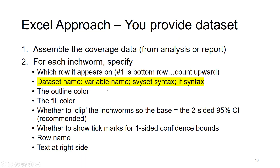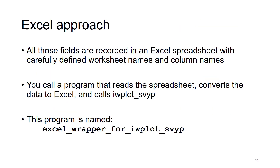In other situations, you might not have estimated the coverage yet, but you have the dataset sitting around with the zero-one outcome variable. So what you provide instead is the dataset name, the variable name, and then some survey-set syntax and some if syntax. Everything else is the same — you put that information in an Excel spreadsheet.